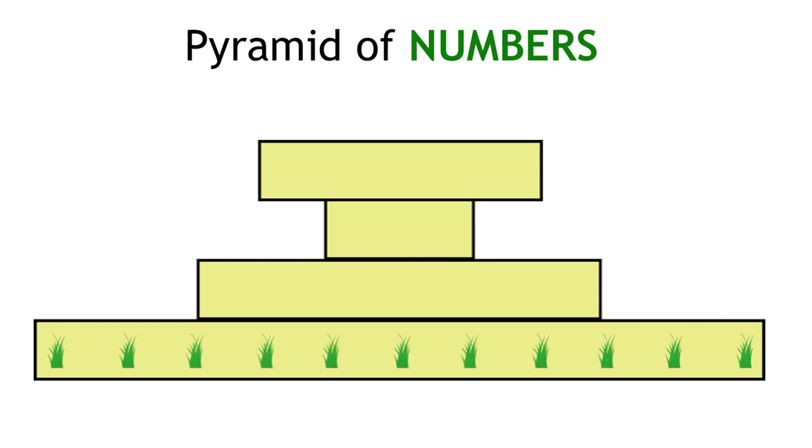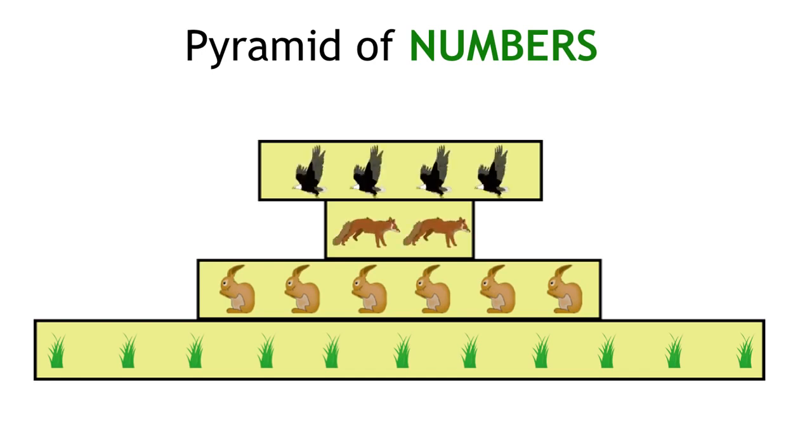So let's look at the following pyramid of numbers, which doesn't take into account the size of organisms. In this ecosystem, we have grass, which is eaten by rabbits, who are then eaten by foxes, who are finally eaten by eagles.